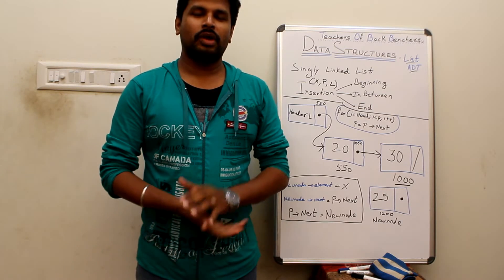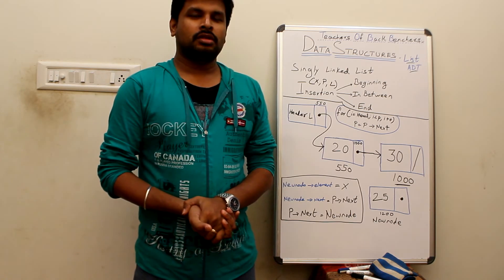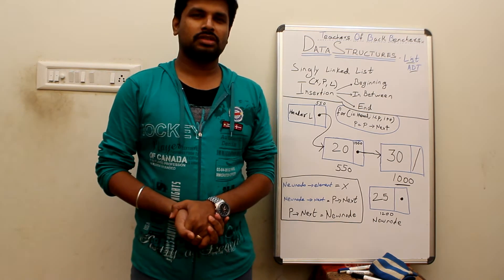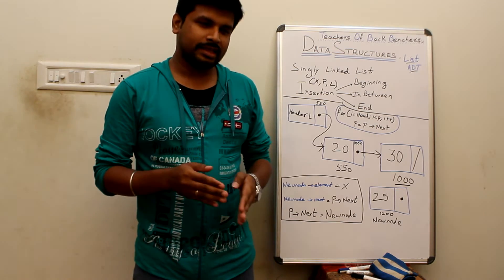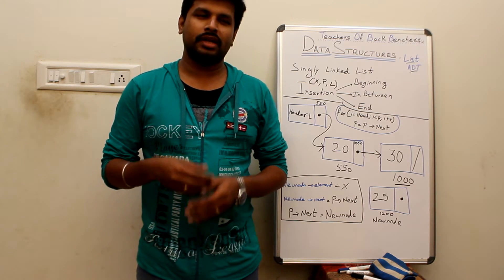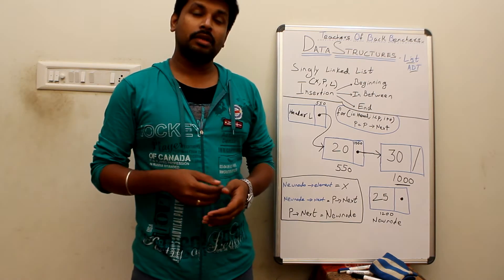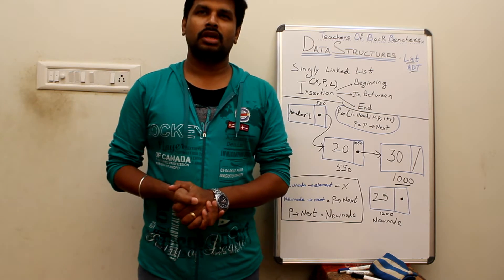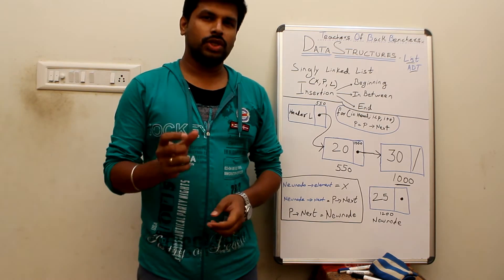Welcome to the fourth tutorial on data structures. So far we have seen three tutorials covering the types of data structures — linear and nonlinear — and the linear type is divided into List ADT, Stack ADT, and Queue ADT. The List ADT is further implemented using array implementation as well as linked list implementation.